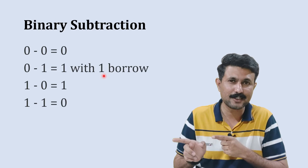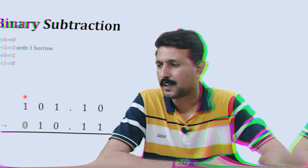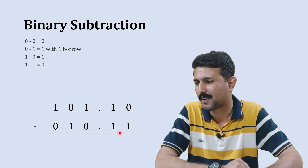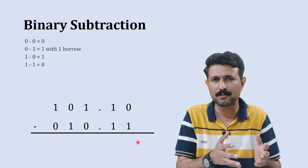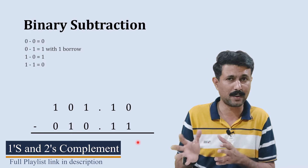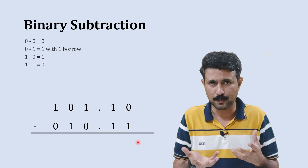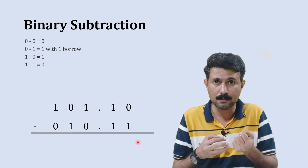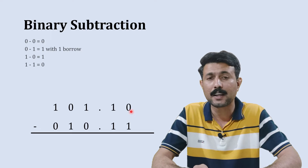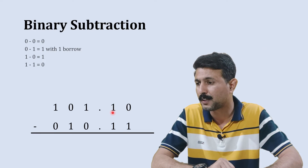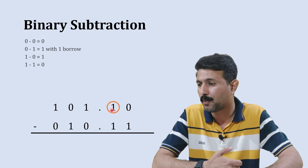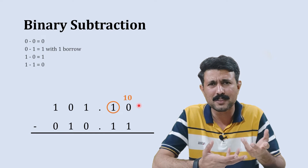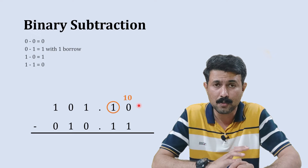We'll understand this logic using an example. Starting with 0 minus 1 — there is nothing to subtract from, so we need to borrow from the next weighted position. Just as in decimal we borrow to get a value 10 times larger, in binary we borrow 1 from the next position. That borrowed 1 becomes 1 0 at the current position.